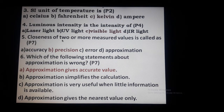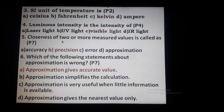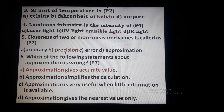Question 5: closeness of 2 or more measured values — that closeness is called precision. It is not accuracy. Being near to each other in measured values is called precision.